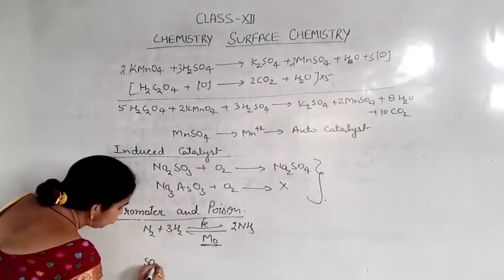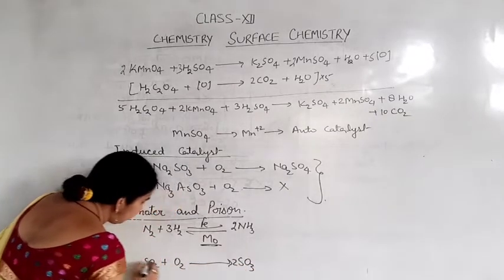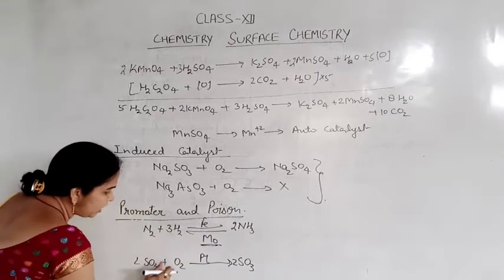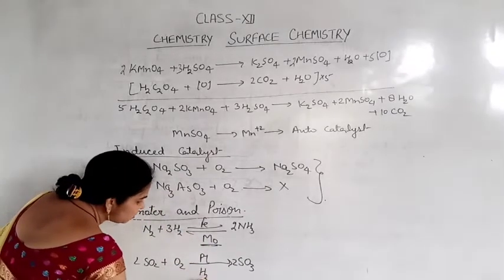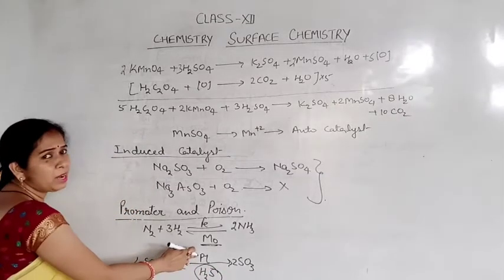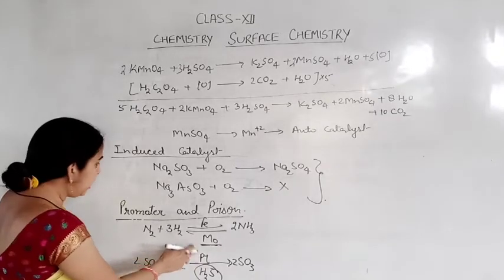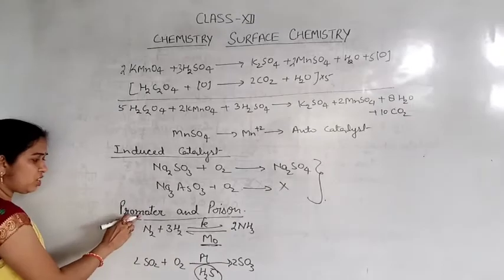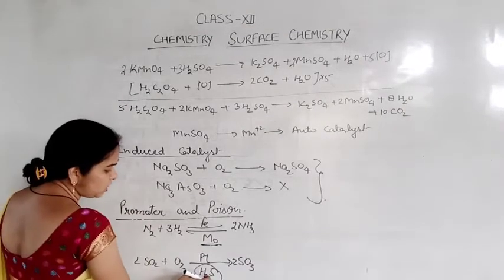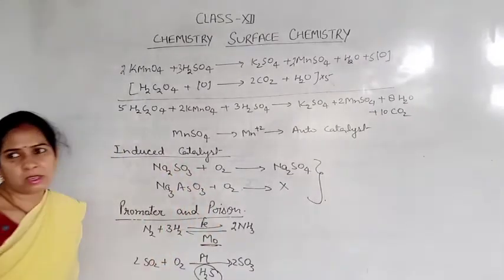When SO2 is oxidized into SO3 in the presence of platinum, if H2S is present in the reaction, it acts as a poison for the platinum catalyst and decreases its activity. To summarize: substances which increase the activity of catalysts are called promoters, and those which decrease the activity of catalysts are called poisons.